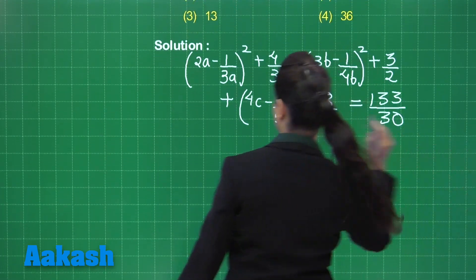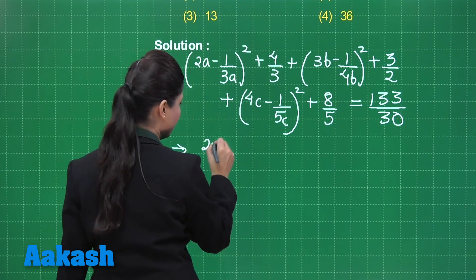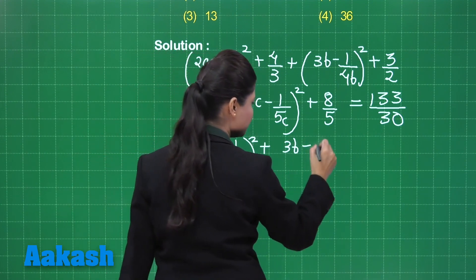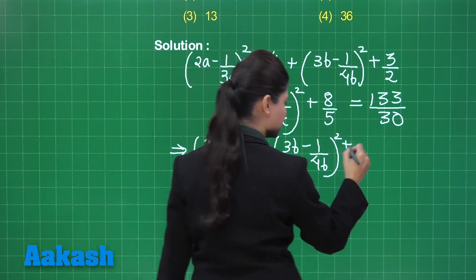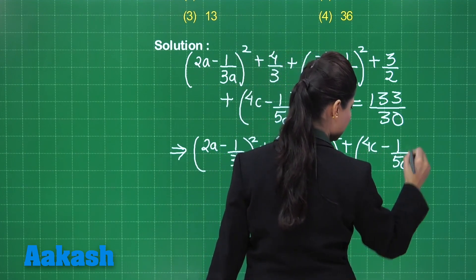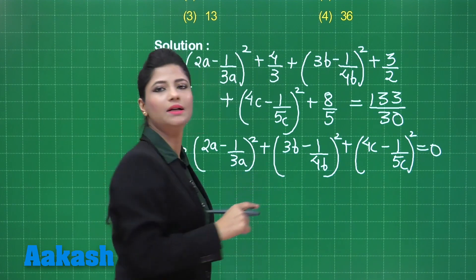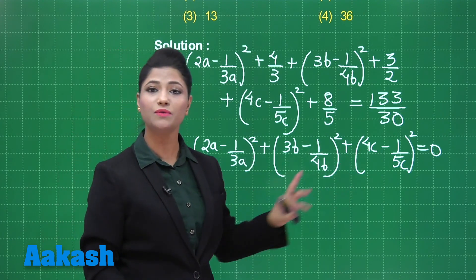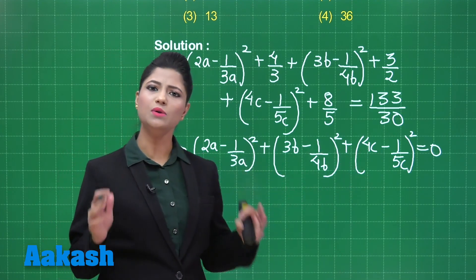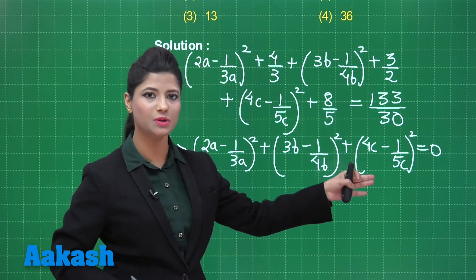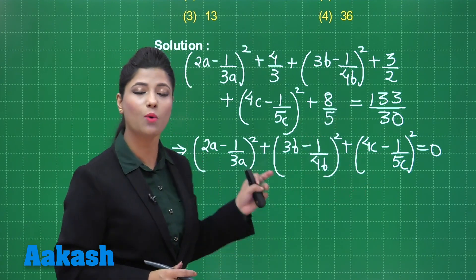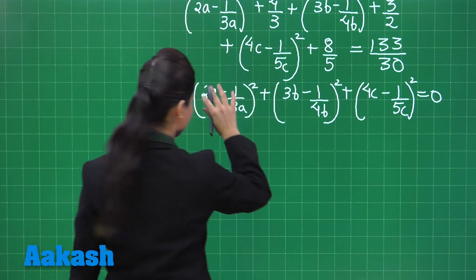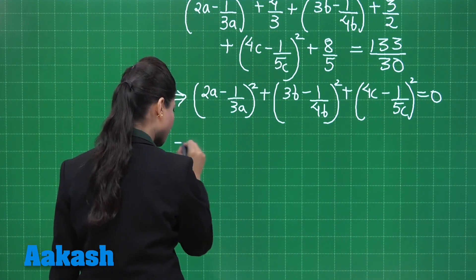So the constants cancel, and on the right-hand side you get 0. That means in the next step you obtain (2a − 1/3a)² + (3b − 1/4b)² + (4c − 1/5c)² = 0. On the left-hand side we have the sum of squares of three quantities — a sum of three non-negative quantities equal to 0.